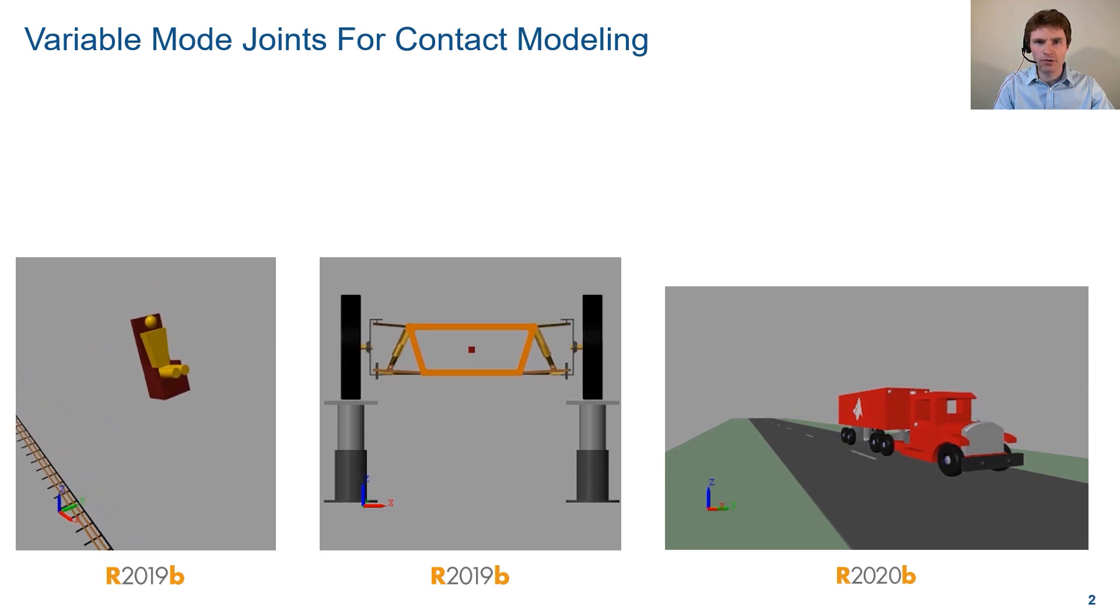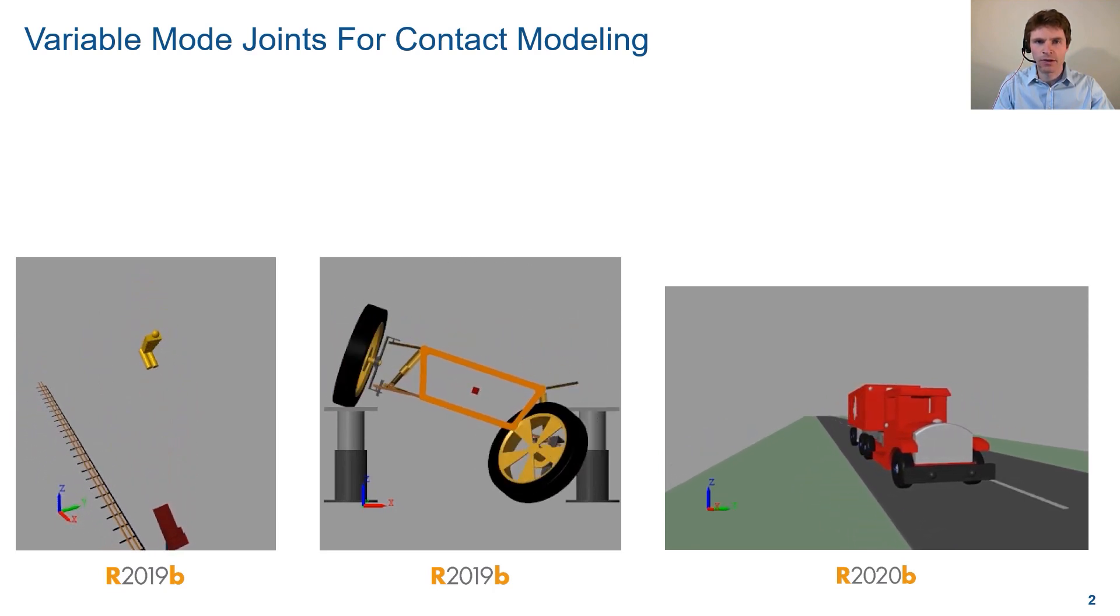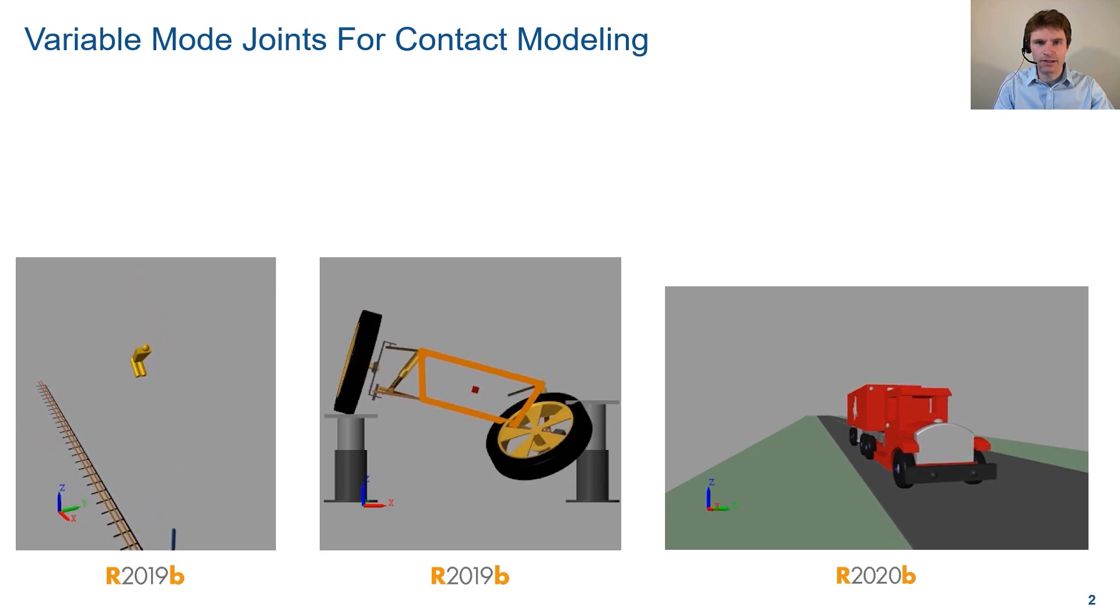These videos show the use of variable mode joints for ejector seat modeling, joint failure mode and fault analysis, as well as trailer hitching and decoupling.